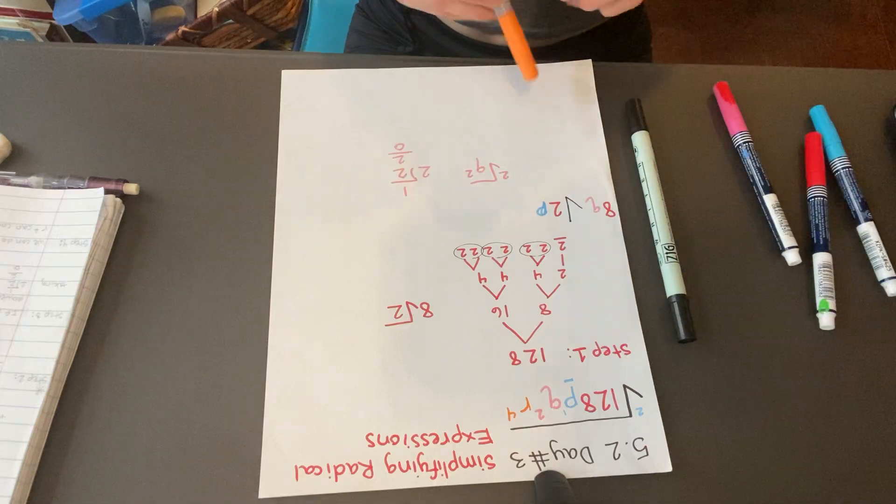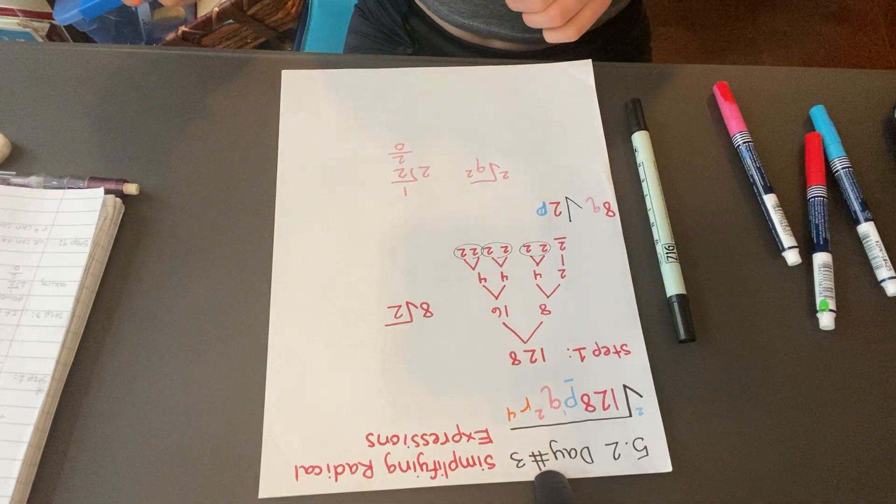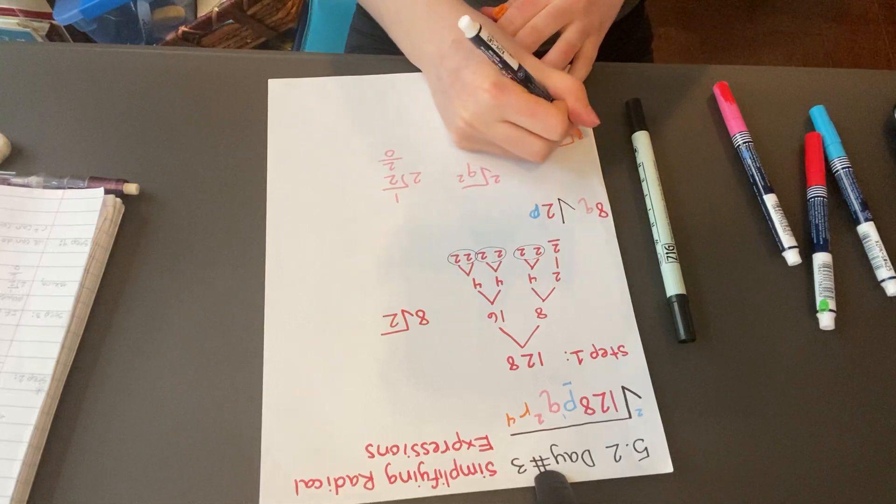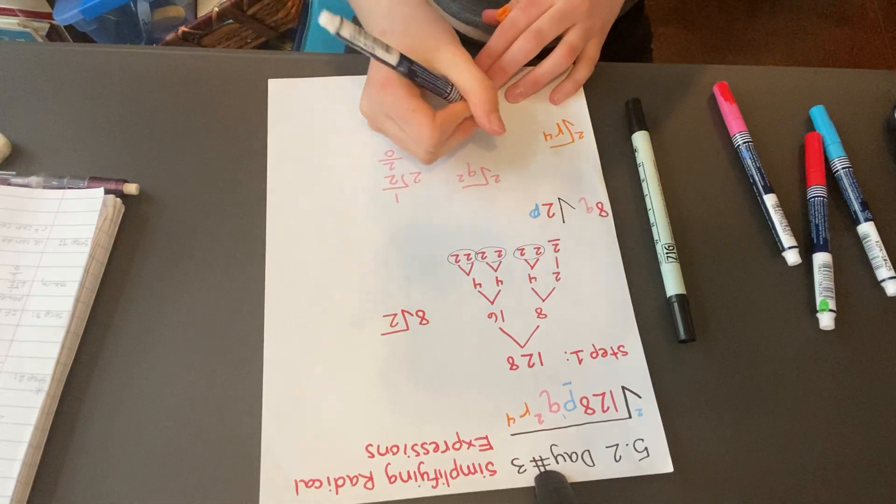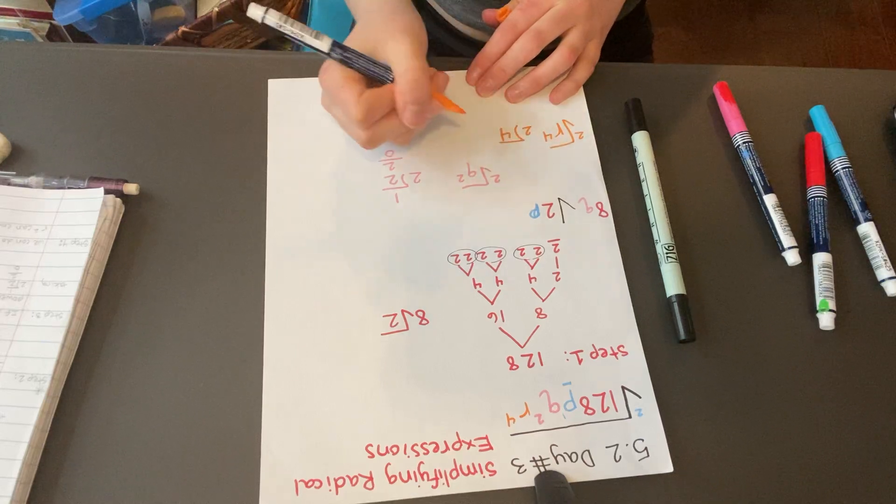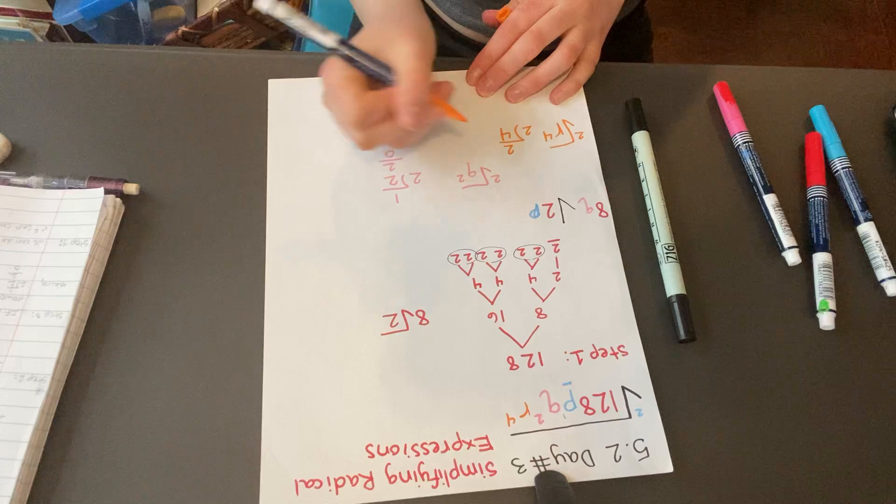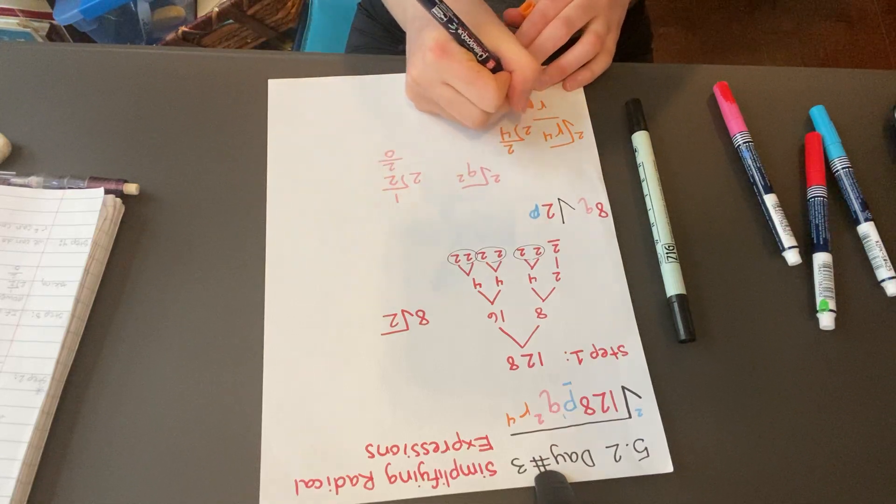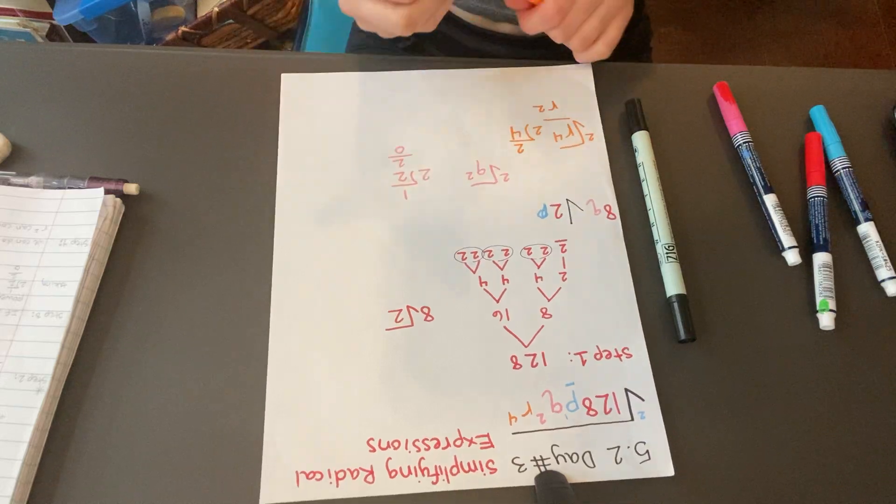Lastly, we're going to deal with the R to the 4th. The square root of R to the 4th, we can divide 4 by 2. 2 goes into 4 twice, so we can bring out an R squared in front of the radical.